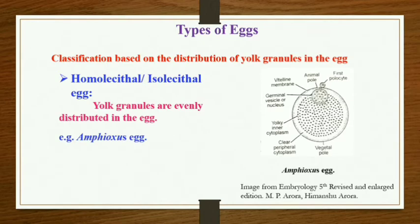The example is given here. You can see the amphioxus egg in which even distribution of dark granules is seen. These dark granules are nothing but the yolk granules.